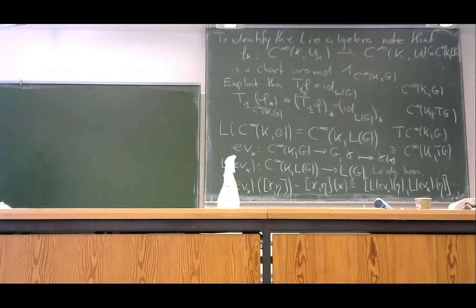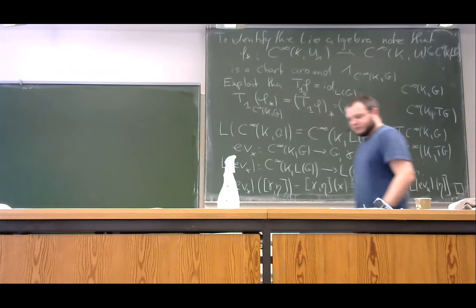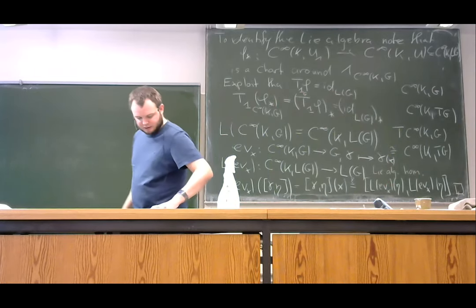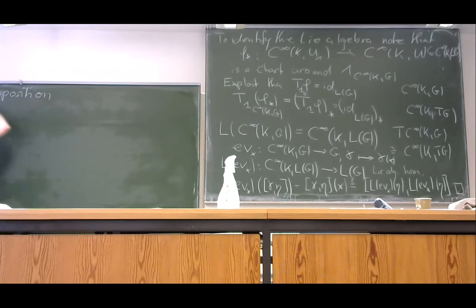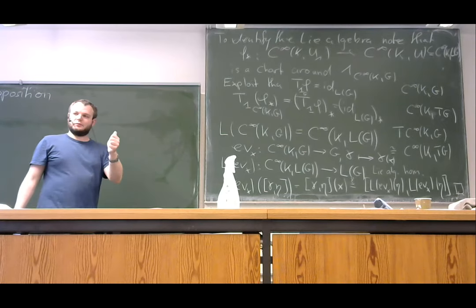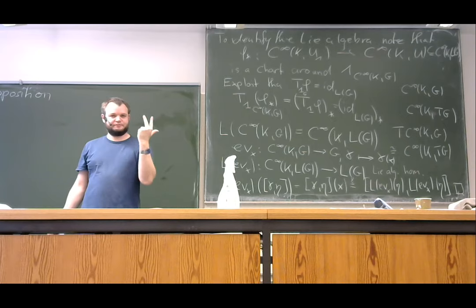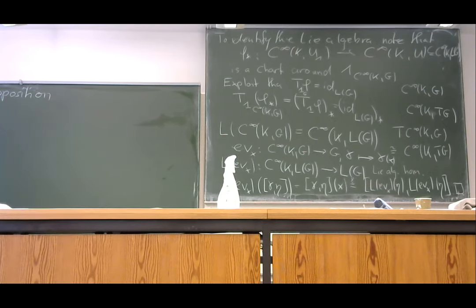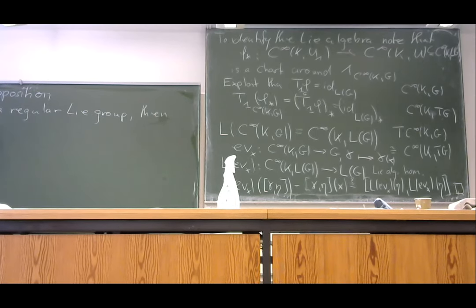There's one last general statement about the structure of current groups. As I mentioned yesterday, when we talked about regular Lie groups, there are several steps: first construct the Lie group — done; then identify the Lie algebra — done; then check regularity. The next proposition should be no surprise: if G is a regular Lie group, then the current group C∞(K, G) is also regular.